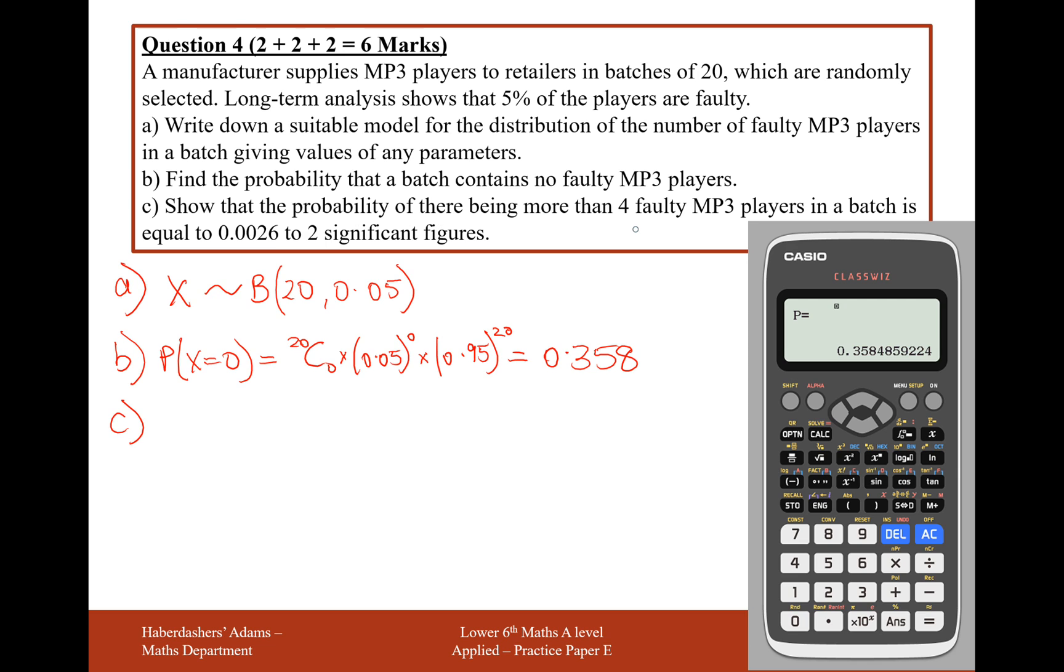The next one shows the probability of there being 4 or more faulty MP3 players in a batch is equal to 0.0026 to two significant figures. What we're looking for here is more than 4, so the probability where X is more than 4.